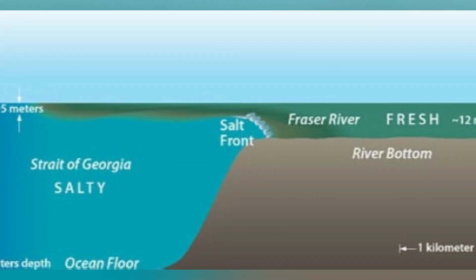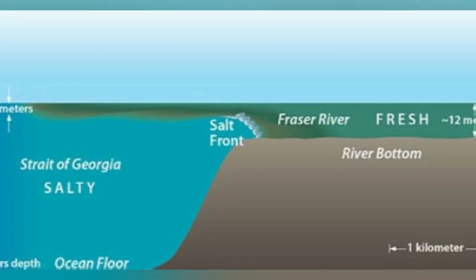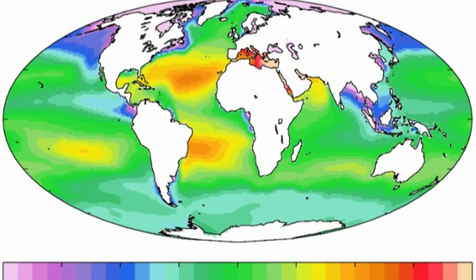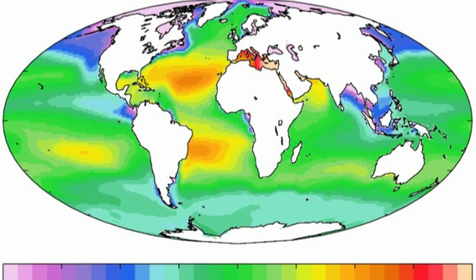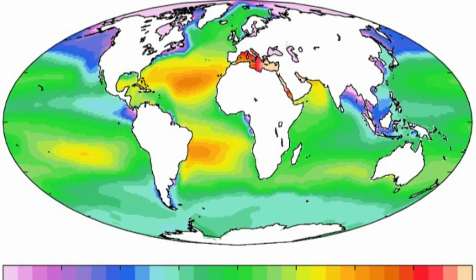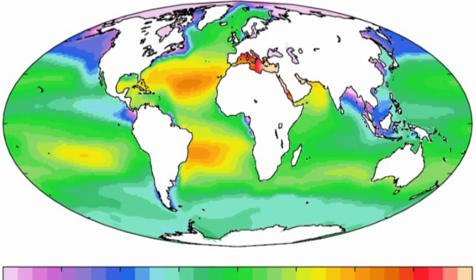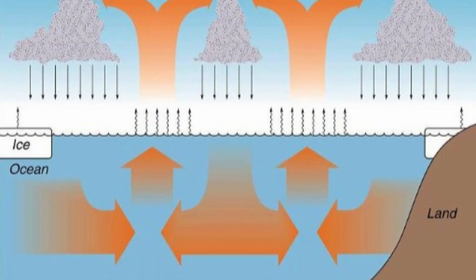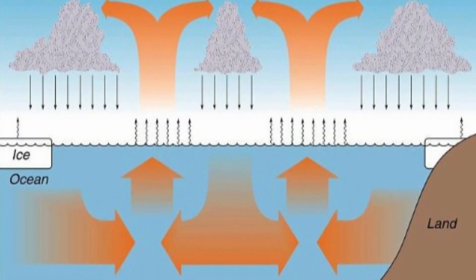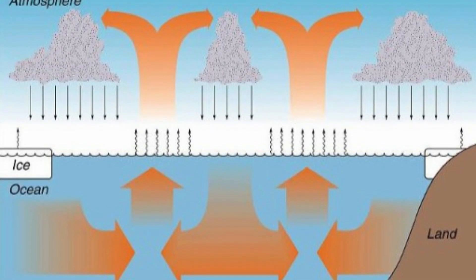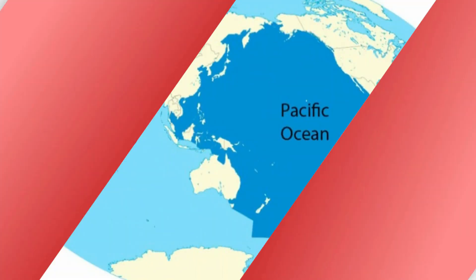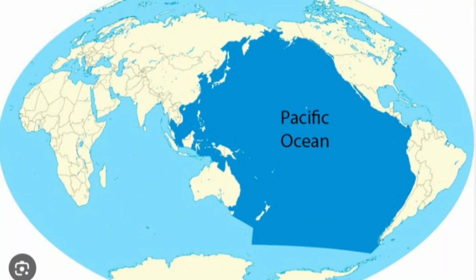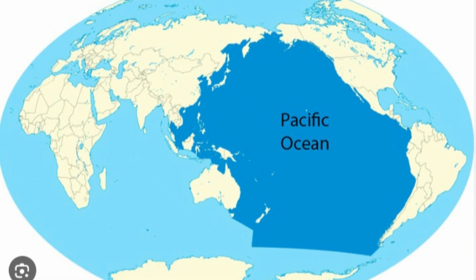Meanwhile, the Pacific Ocean receives less fresh water input from rivers, resulting in lower salinity levels overall. Additionally, the Pacific's vastness allows for more dilution of the salt content, further contributing to its comparatively lower salinity.